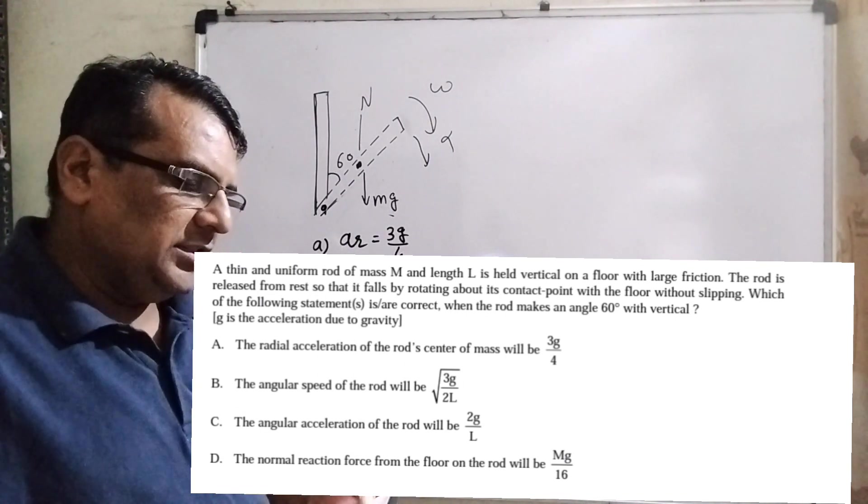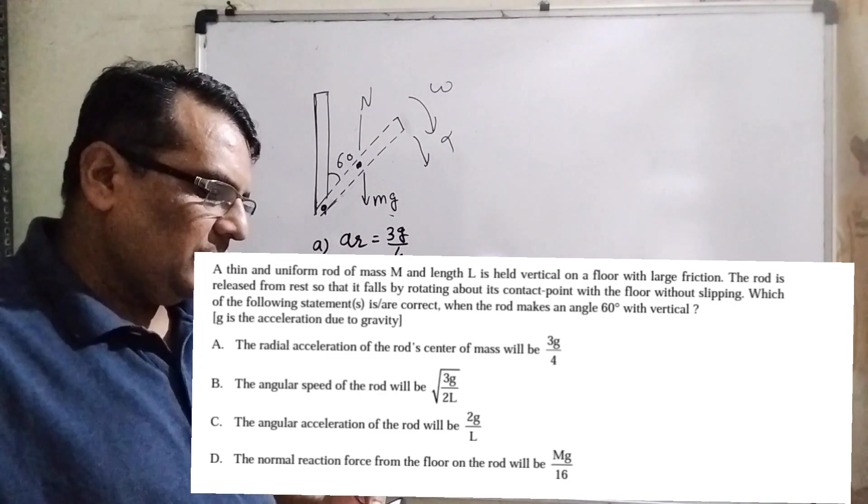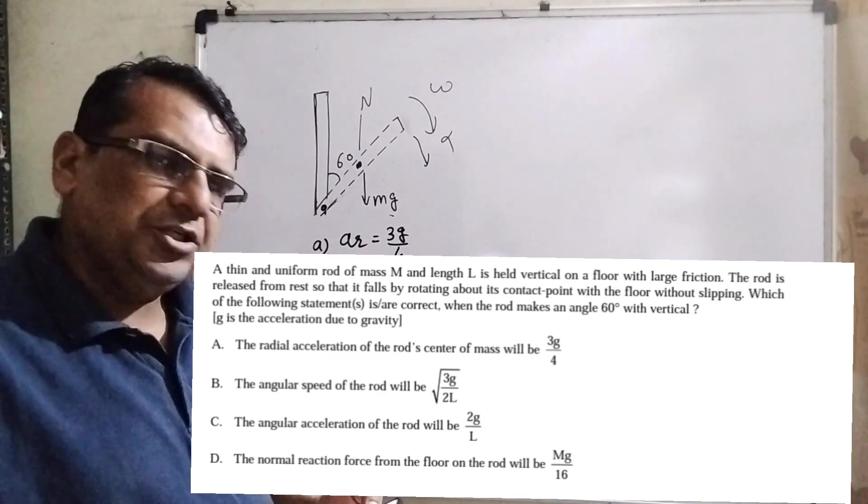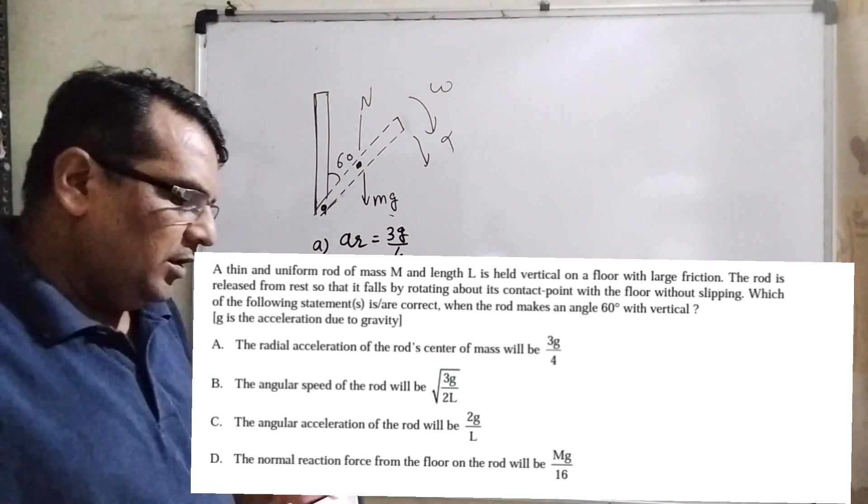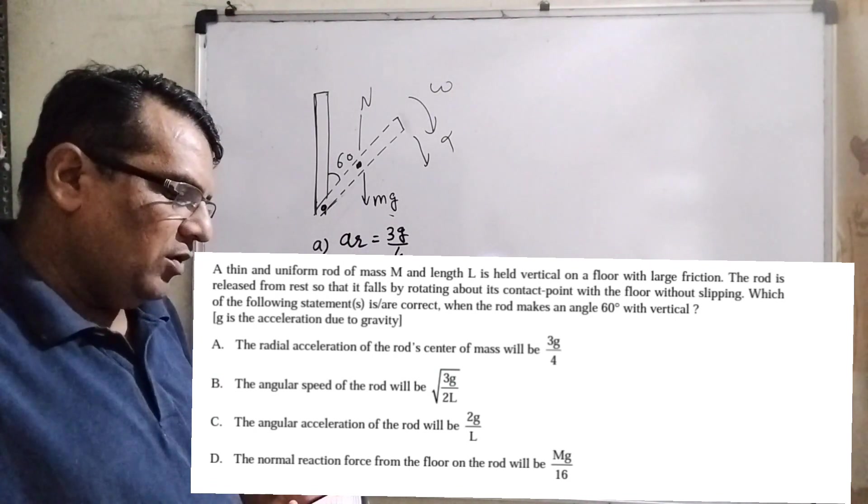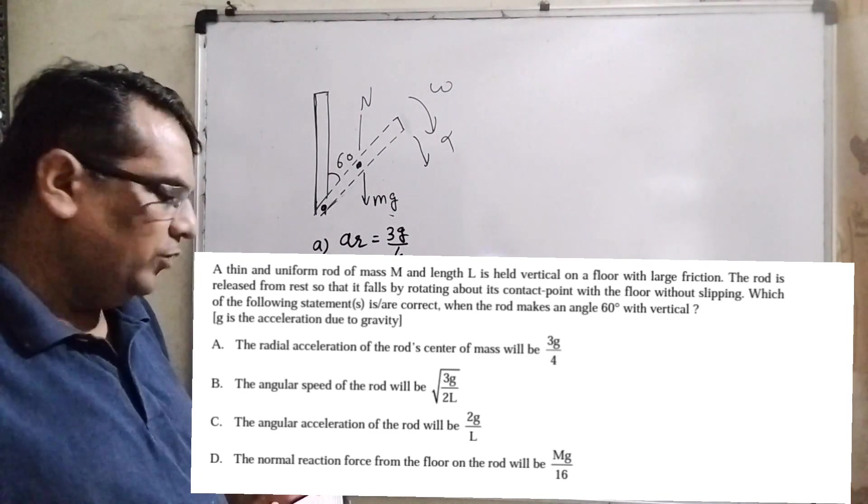Which of the following statements are correct? This is a multiple choice question when the rod makes an angle 60 degrees with vertical and small g is the acceleration due to gravity. You have given four options. The radial acceleration of the rod's center of mass will be 3g by 4.